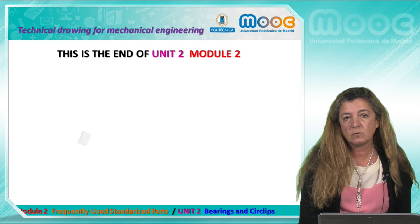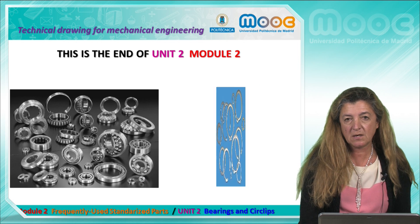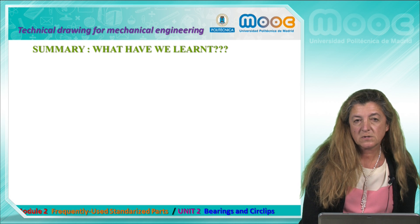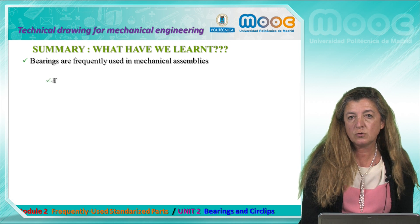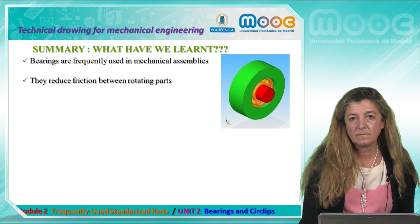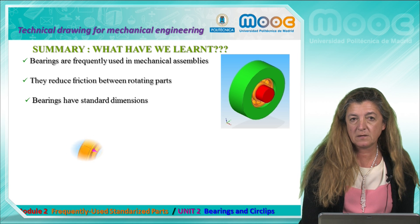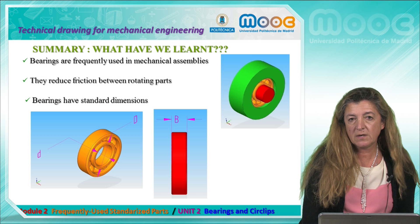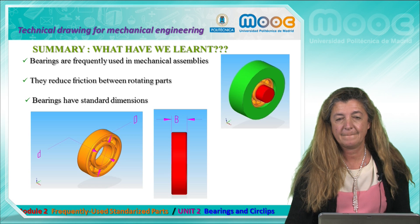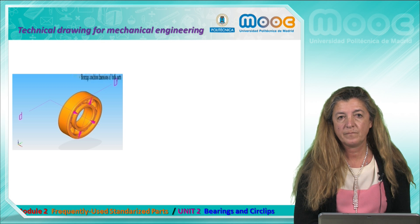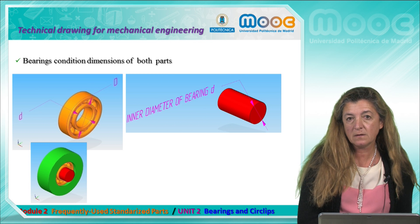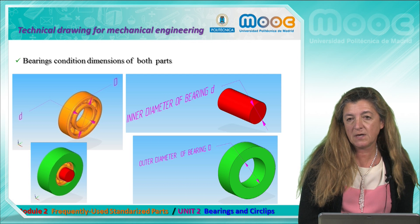This is the end of Unit 2, Module 2. We have been talking about bearings and circlips. Summary: bearings are frequently used in mechanical assemblies and reduce friction between rotating parts. Bearings have standard dimensions — inner ring diameter, outer ring diameter, and width. Bearings condition dimensions of both parts: for the shaft, the inner ring diameter; and for the hub, the diameter of the outer ring of the bearing.